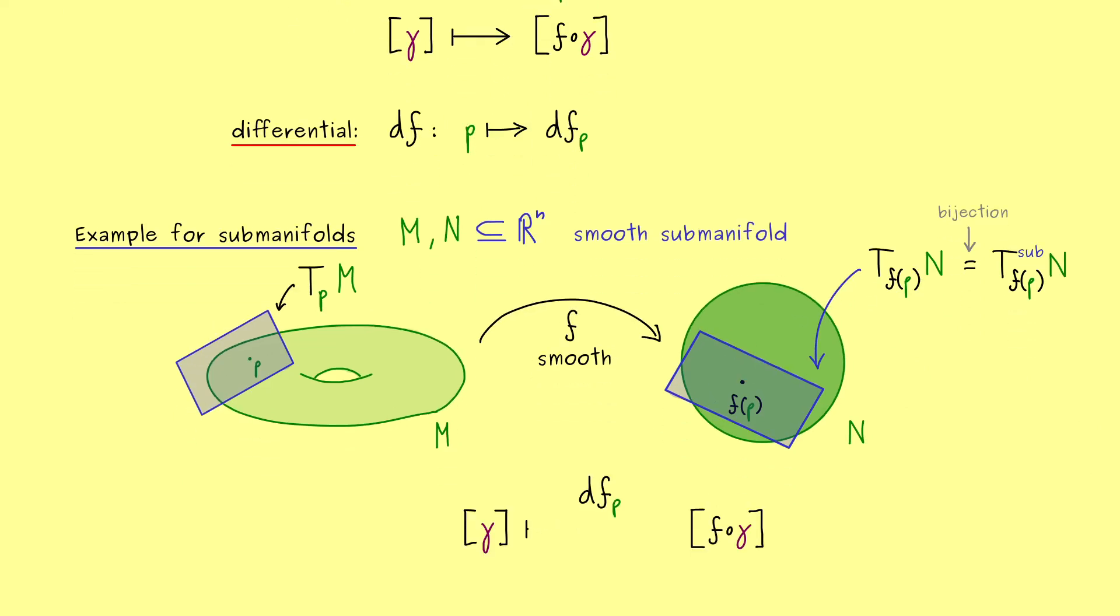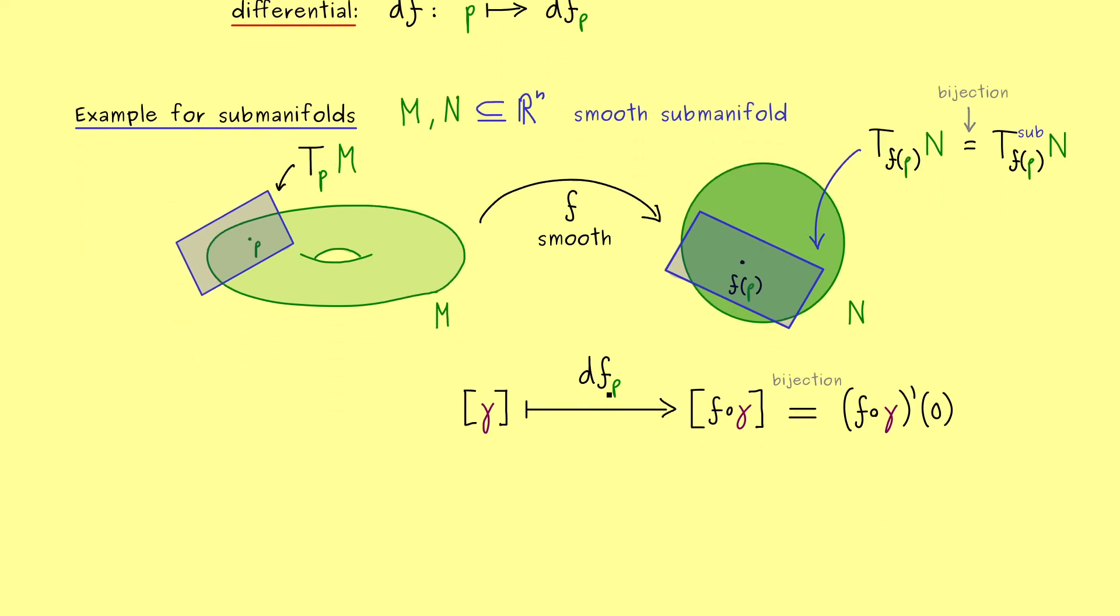First also let's write down that the differential df_p is given by this map. In other words this is our abstract definition of the differential at the point p. With the bijection I want to make it more concrete on the right hand side. Indeed this is part 21: the equivalence class can be substituted by the derivative of this new map at the point 0, and 0 is just the parameter chosen for γ being at the point p. So maybe again here on the right hand side we have the concrete definition of a tangent vector in R^n and here on the left we just have the abstract definition. However here the point is for submanifolds we can make it very concrete.